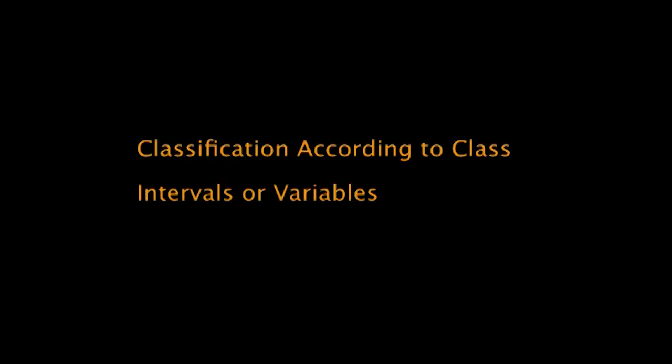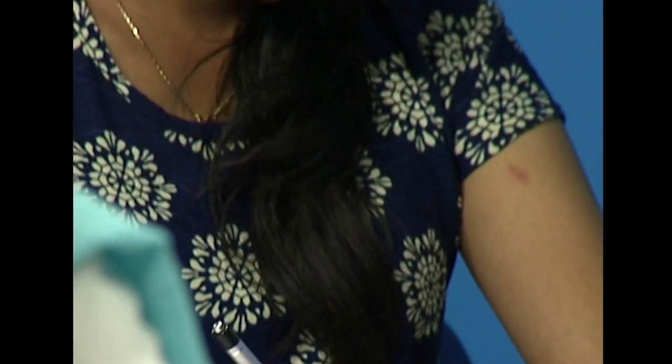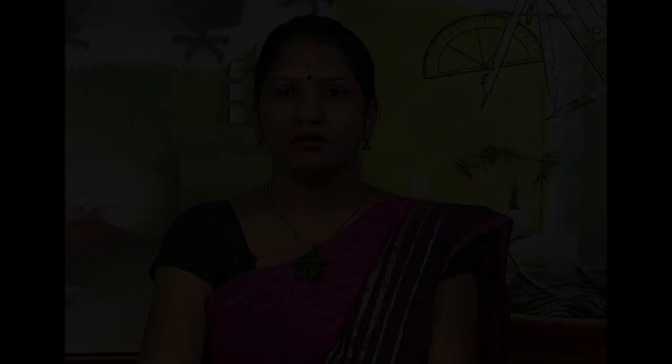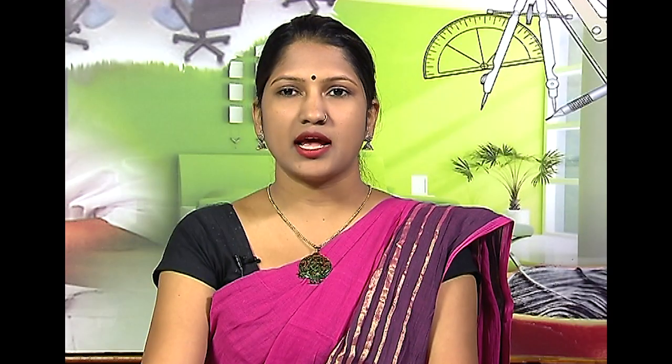Classification according to class intervals or variables: quantitative data expressed in numbers is classified according to class intervals covering each and every item. After finding the least and the highest value of an item, those items are to be classified into different class intervals. For example, in a community of 500 people, the least age was 1 year and the highest was 50 years. The number of classes should not be too large or too small; as a rule, one should have between 10 and 25 classes, the actual number depending on the total frequency. Further, classes should be exhaustive and non-overlapping, so that no observed value falls in more than one class.